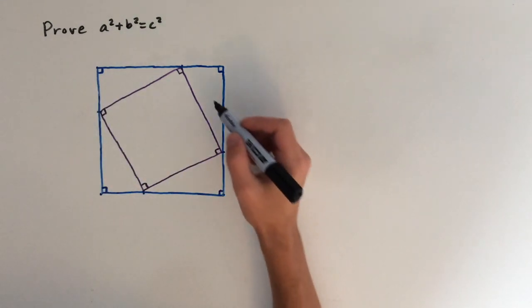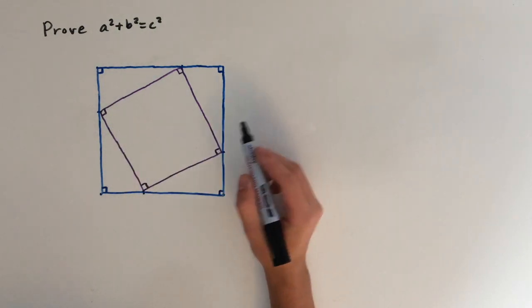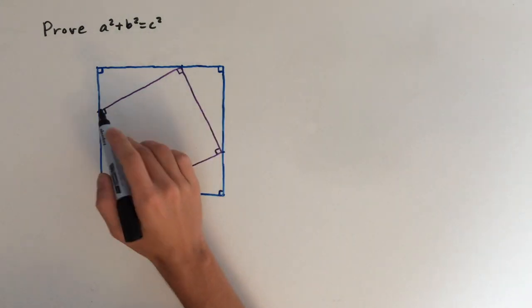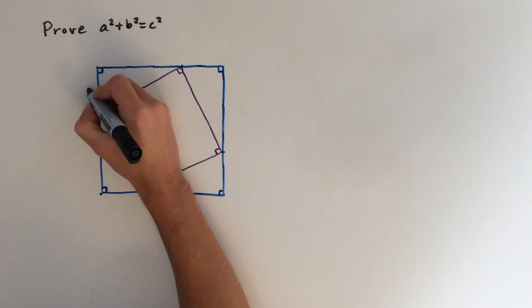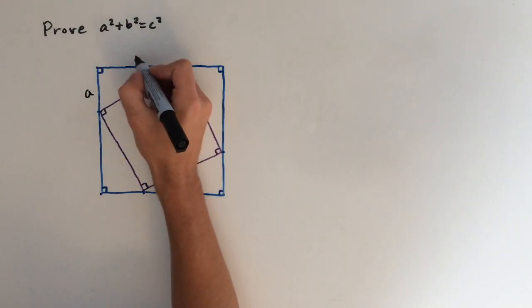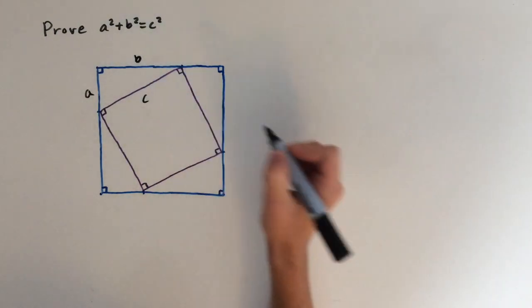And as a result we've got four right-angled triangles which are all identical. So firstly we're going to look at the triangle here in the top left, and I'm going to label this side as A, and then the longer side as B, and the hypotenuse as C.